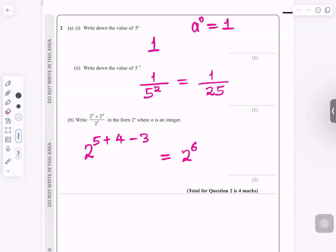Question number 2: write down the value of 5 to the power 0. Any number raised to the power 0 is equals to 1. So the answer is 1.